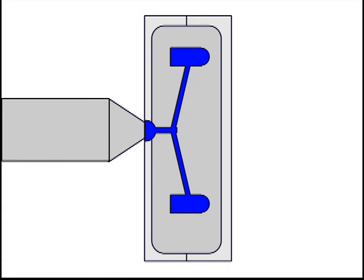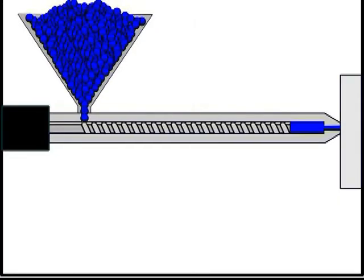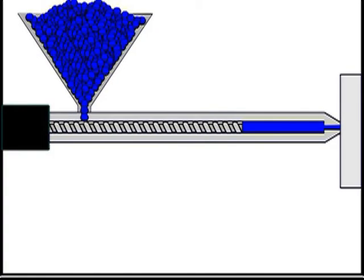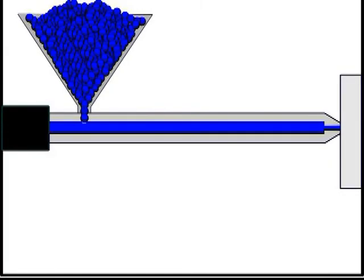This part of the cycle is called injection. Once this movement is done, the ball screw will turn the other way to reload the gun one more time.